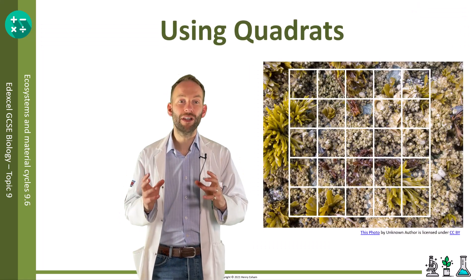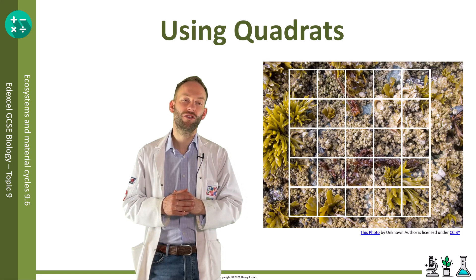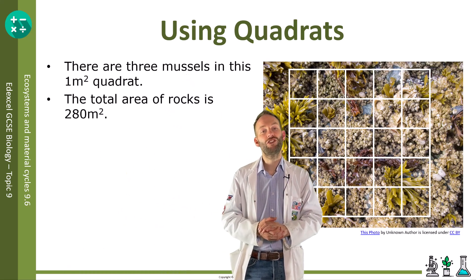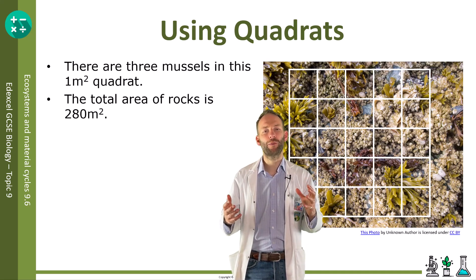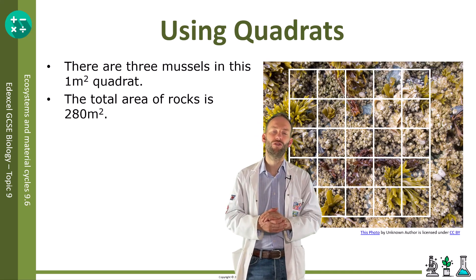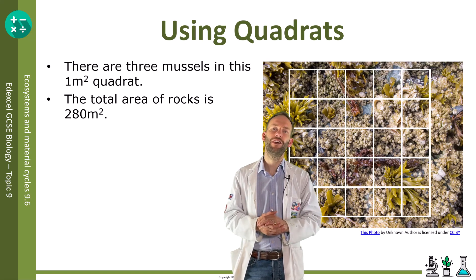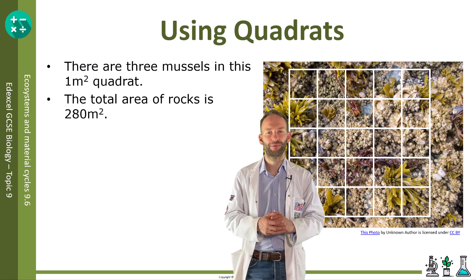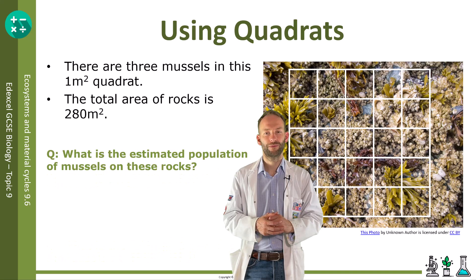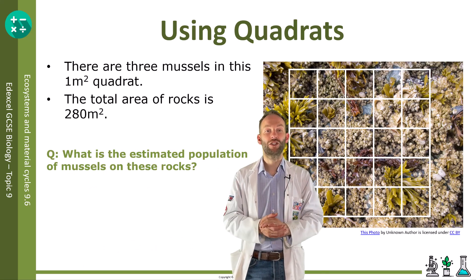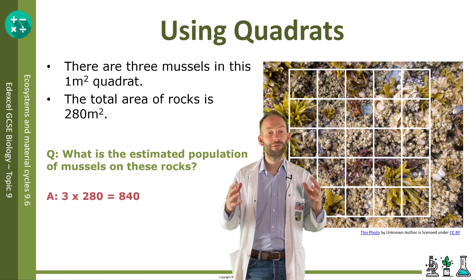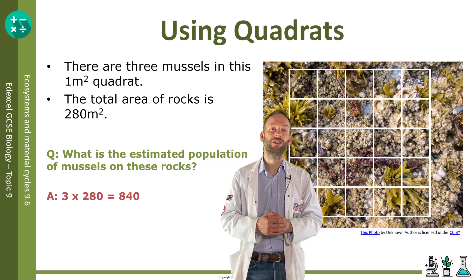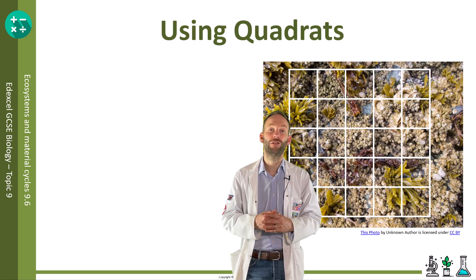There are three mussels in this one metre squared quadrat and the total area of the rocks is 280 metres squared. What would be the estimated population of mussels on these rocks? You've got one metre squared and the total area is 280 metres squared, so all we have to do is multiply three by 280 to get our total estimation, which is 840 mussels.